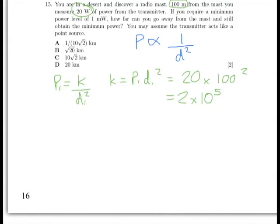So now let's think about P2. So P2 must be equal to the same constant divided by D2, the distance, the second distance squared. We're interested in what D2 is, so let's rearrange that to get D2 squared equals the constant divided by P2.